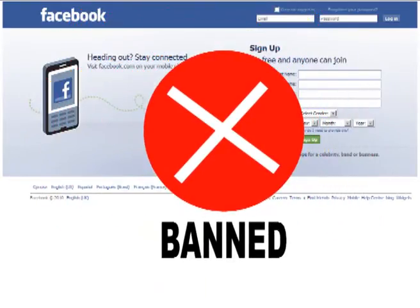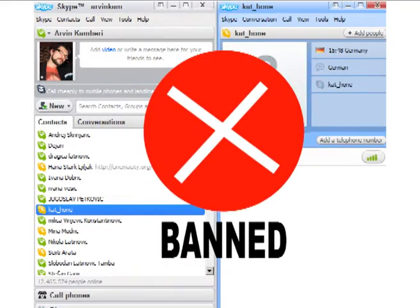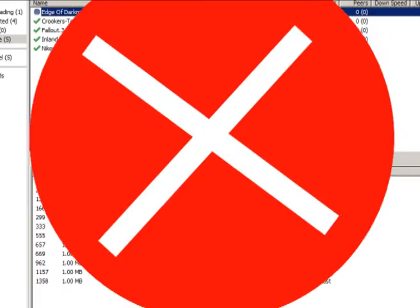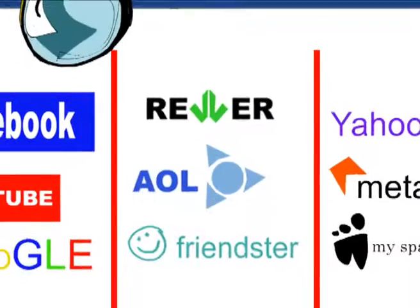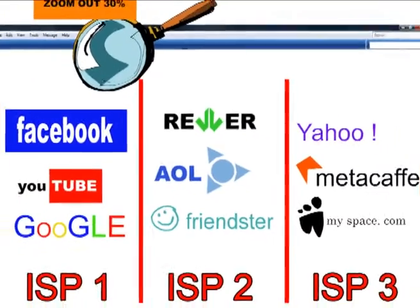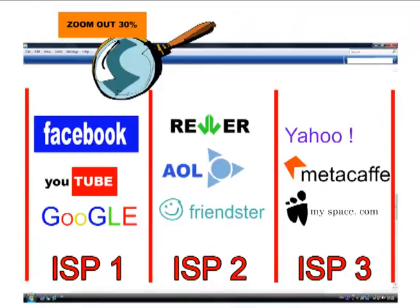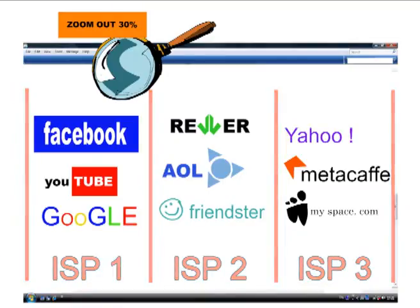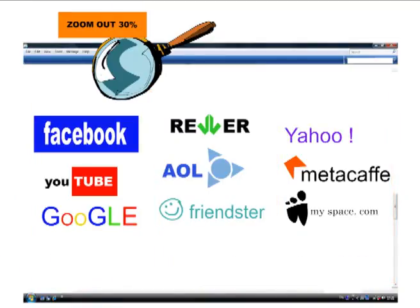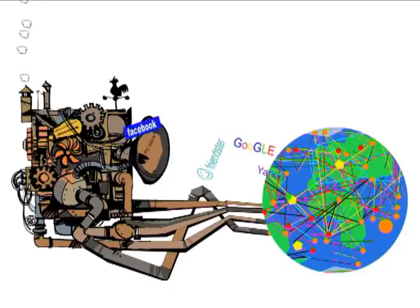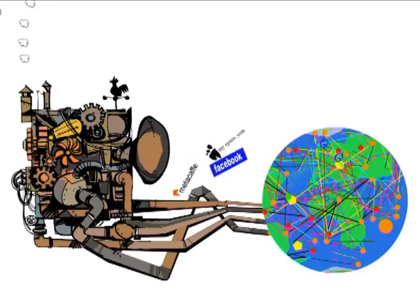What if end users are suddenly banned from accessing certain content, services, or applications? What if the providers limit the consumers' choices and only provide access to certain offers? For an open internet, end users should have the right to access the content, services, and applications of their choice.